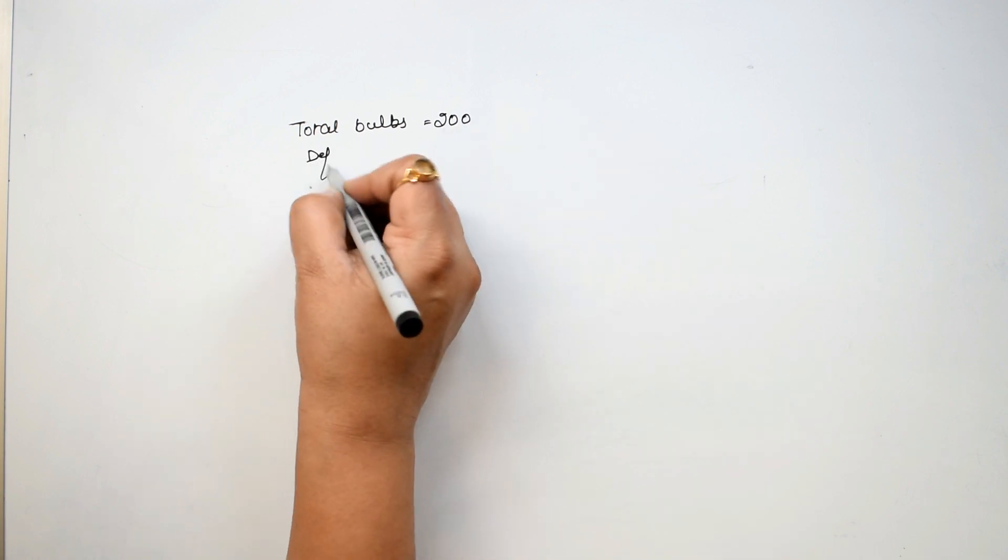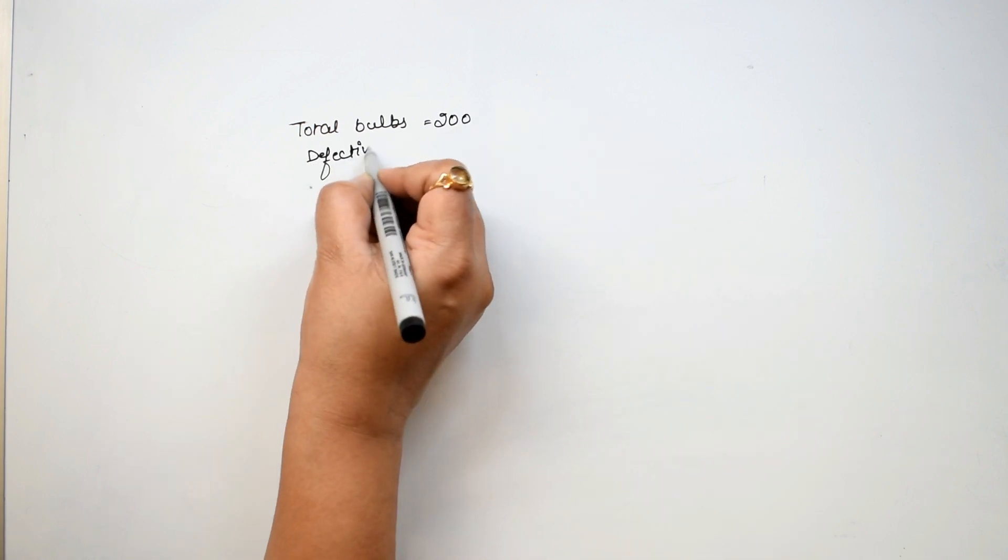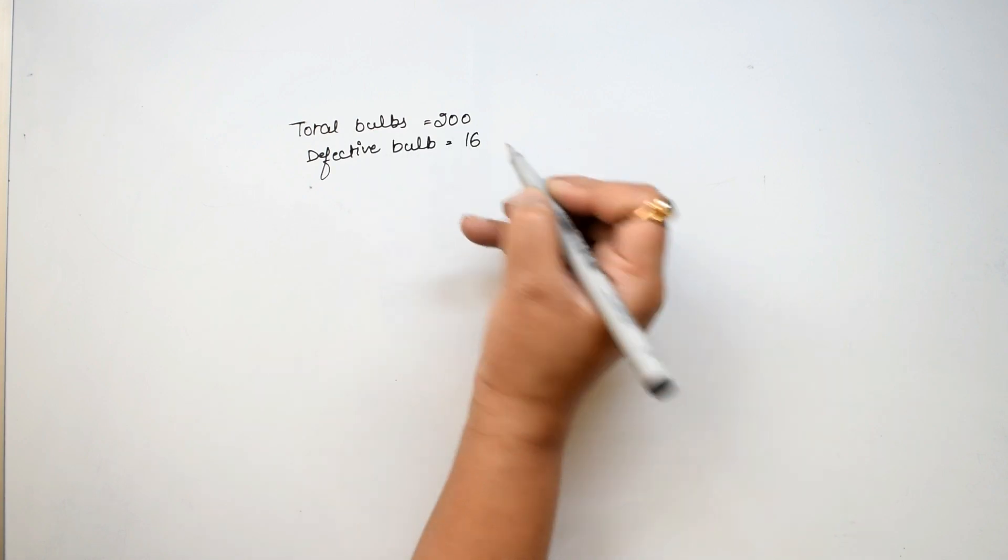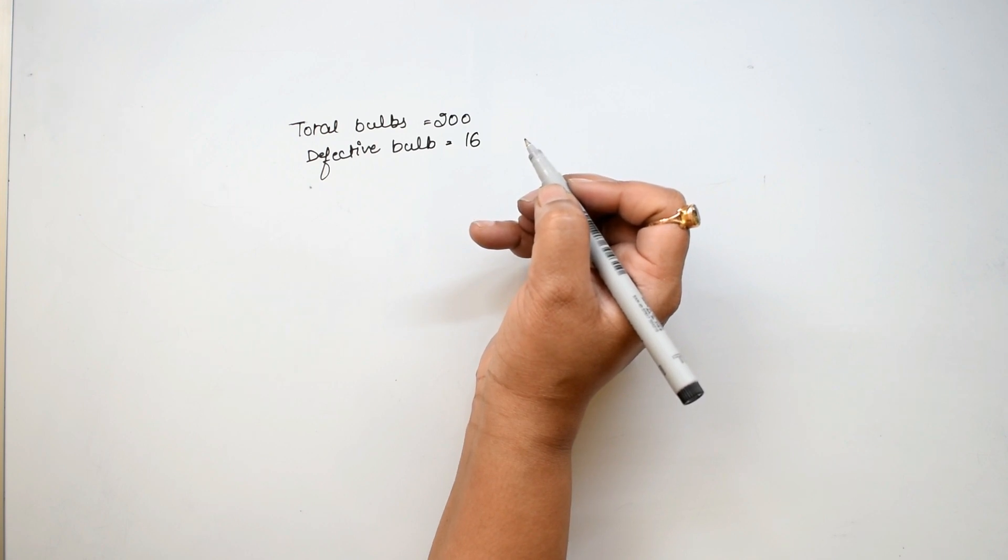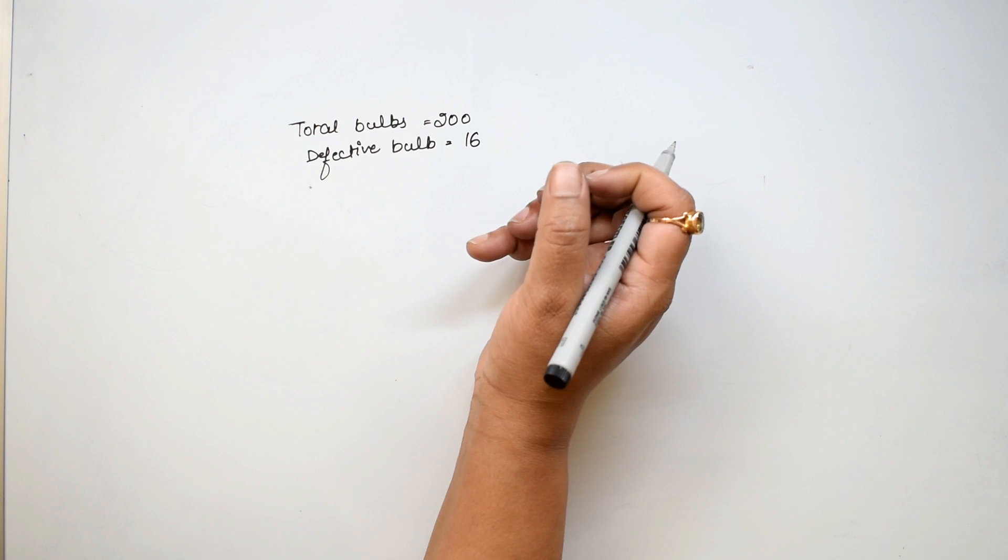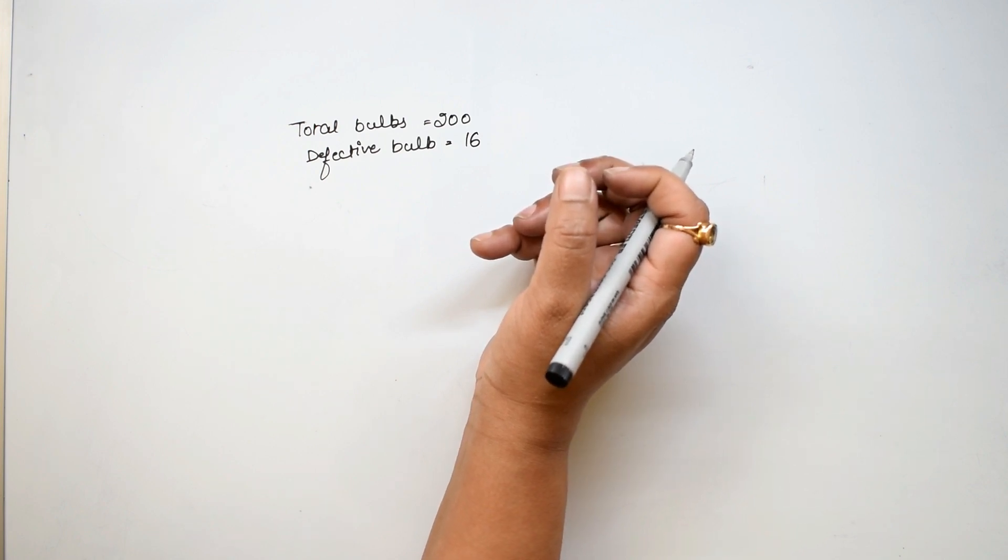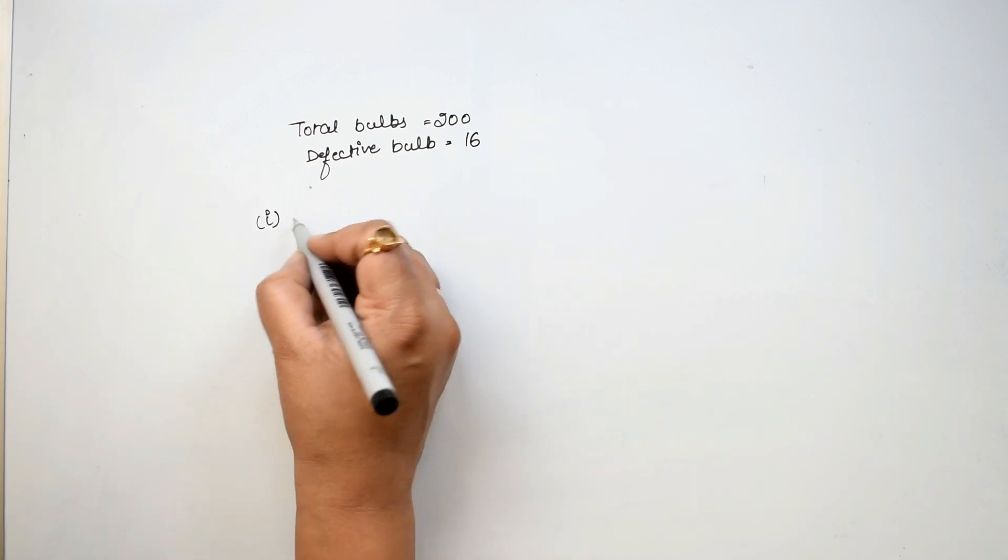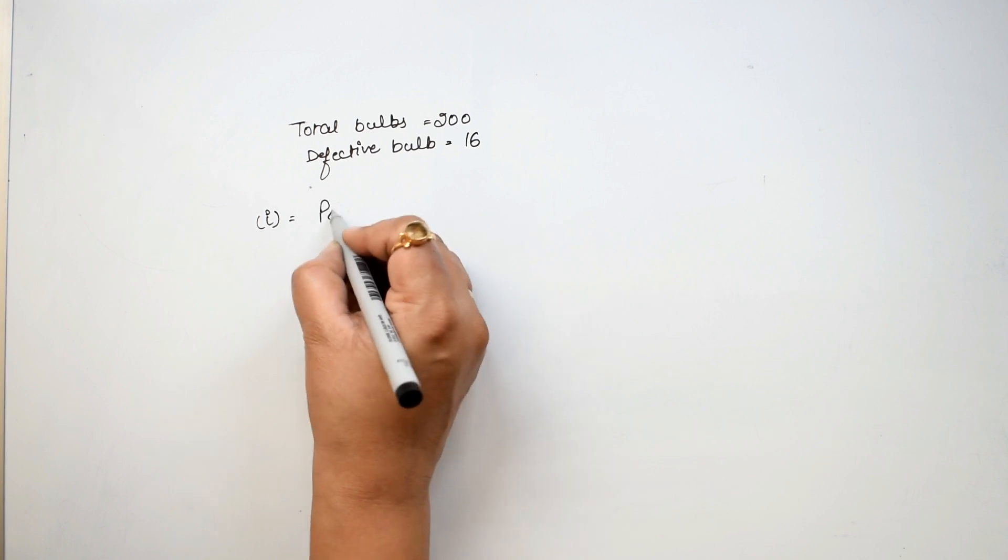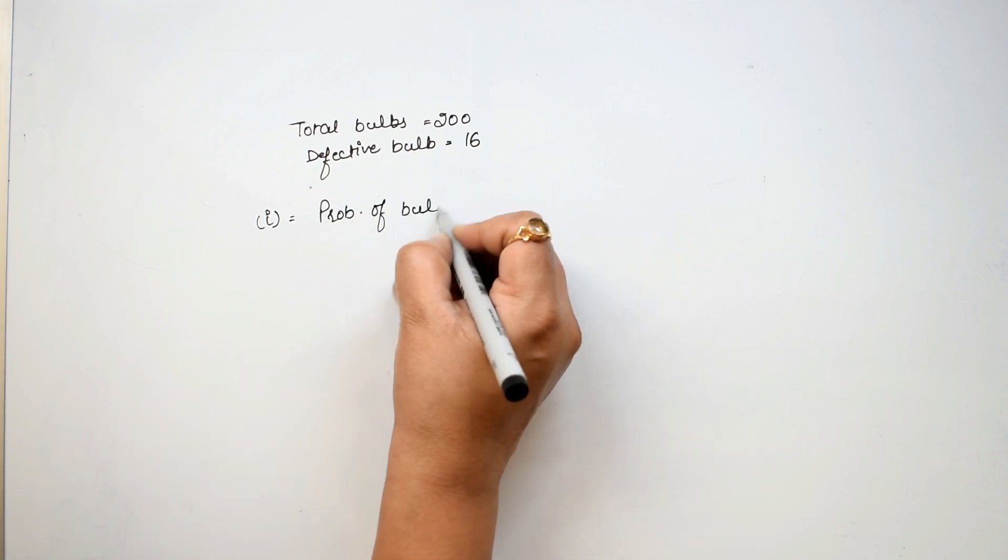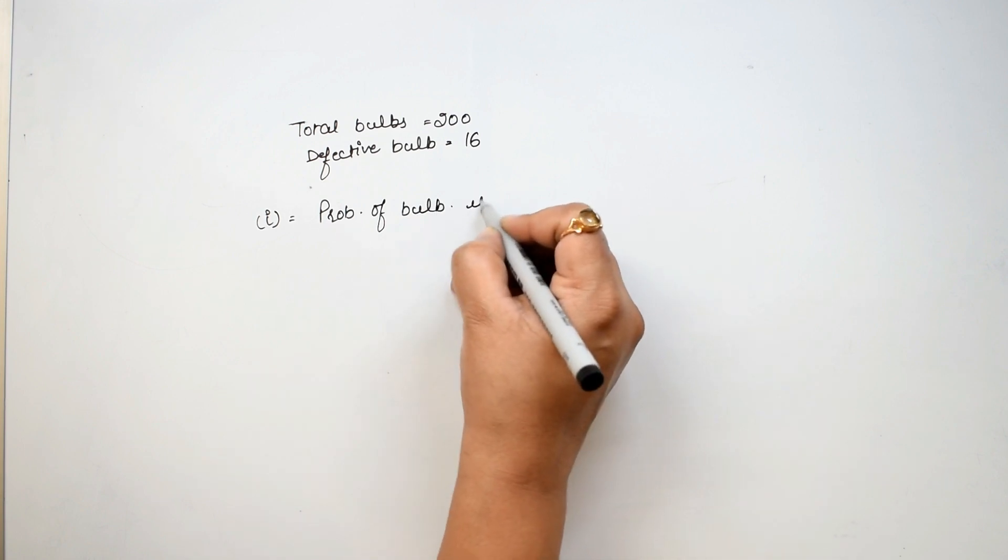How many defective bulbs we have? The information is given, we can write 16. One bulb is taken out at random from the box. What is the probability of the bulb drawn is defective?